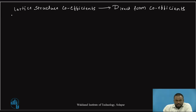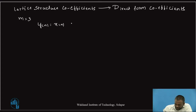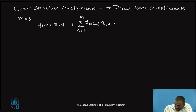First, before deriving the expressions for the general case, let us consider m equal to 3, which means that we are considering the three-stage lattice structure here. For m equal to 3, y(n) is equal to x(n) plus summation k equal to 1 to m of alpha_m(k) x(n minus k). Let us call this equation number 1.